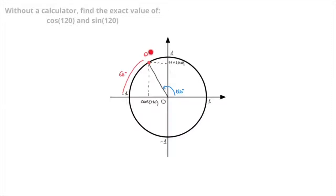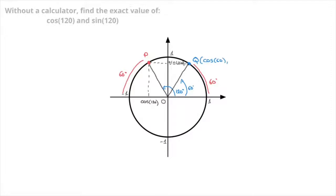We now reflect point P across the vertical axis to define a new point, which we'll call Q, which I'm adding right now in blue. I draw the radius OQ, like so. Since P and Q are the mirror images across the vertical axis, the angle that point Q corresponds to will be the same as the angle we just measured previously — that was 60 degrees. So we can add that here: 60 degrees. By definition, point Q has coordinates cosine of 60 and sine of 60.